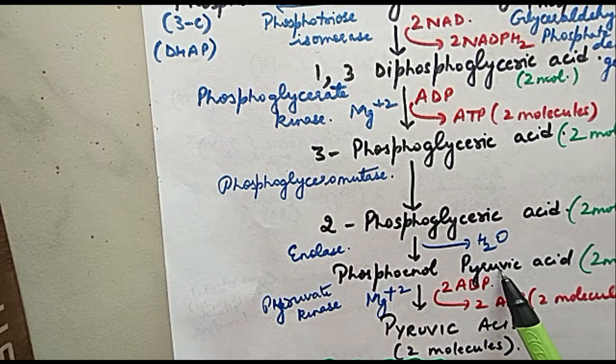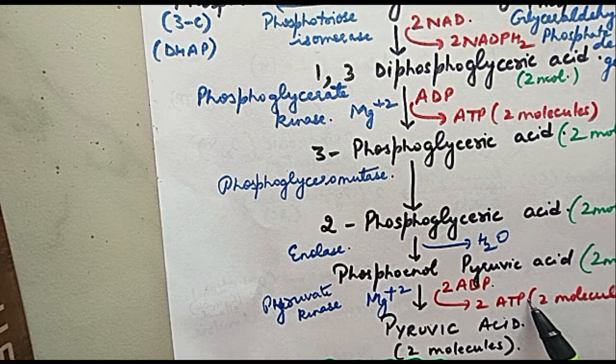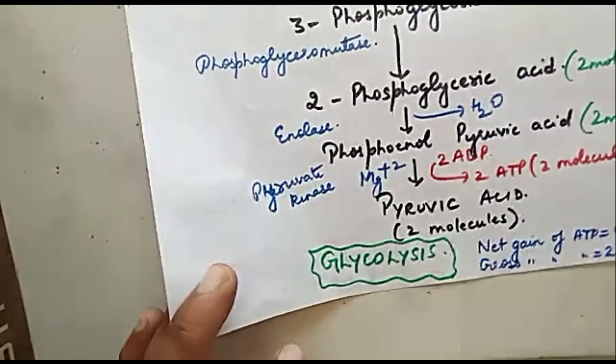Phosphoenol pyruvic acid with the help of enzyme pyruvate kinase will get converted into pyruvic acid. Again, 2 ATPs will be produced. Enzyme involved is pyruvate kinase. So now we see how much ATP has been made.